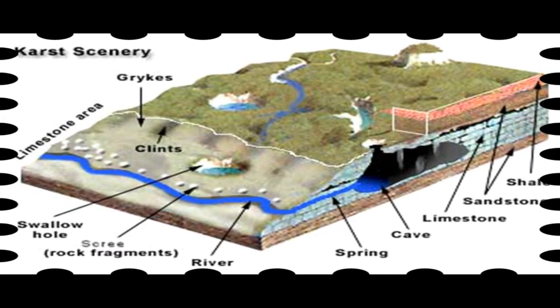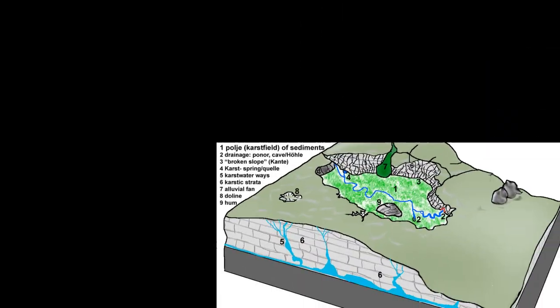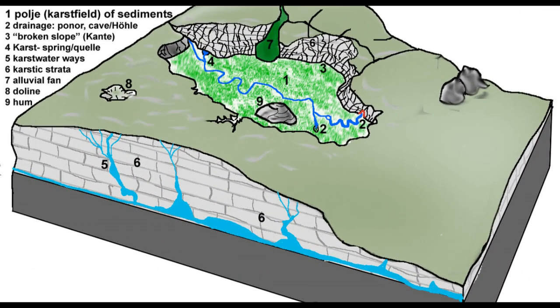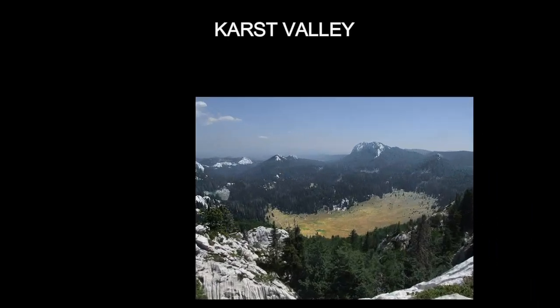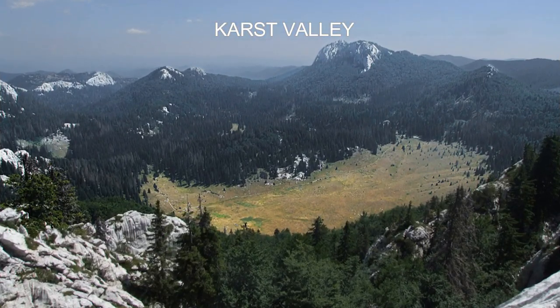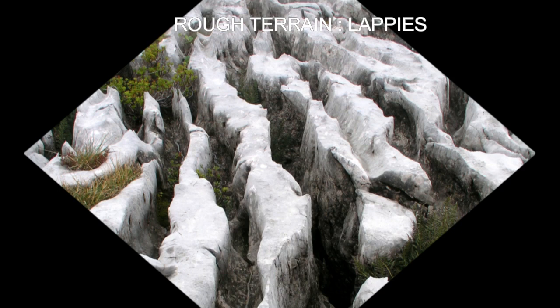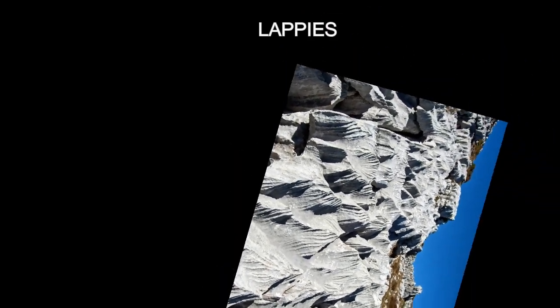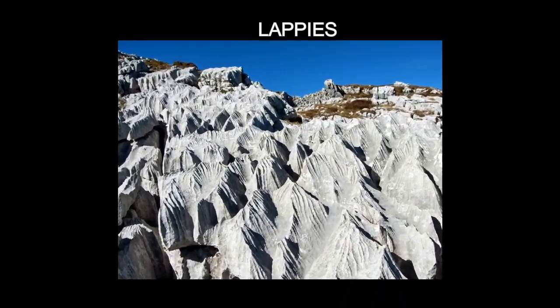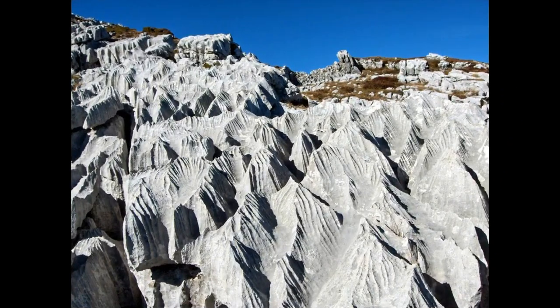Morphology: The karstification of a landscape may result in a variety of large or small-scale features both on the surface and beneath. On exposed surfaces, small features may include solution flutes, or rillenkarren, runnels, limestone pavement, clints and grikes, collectively called karren or lapiés.